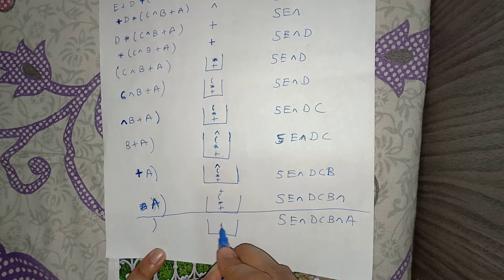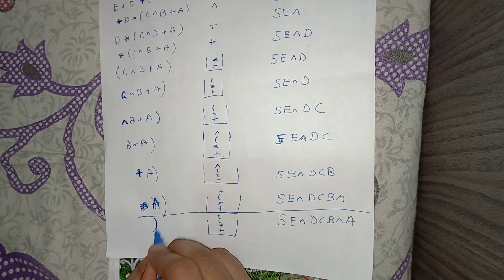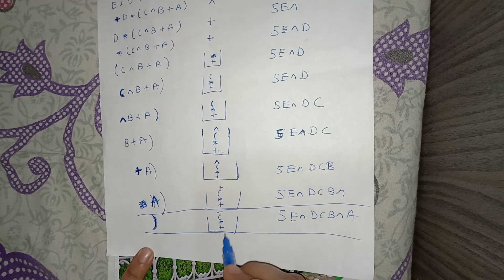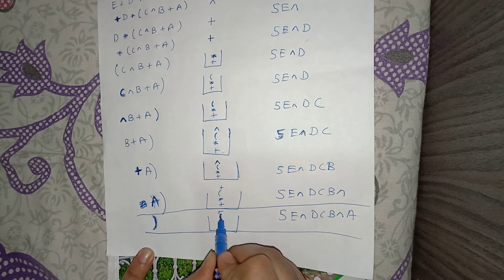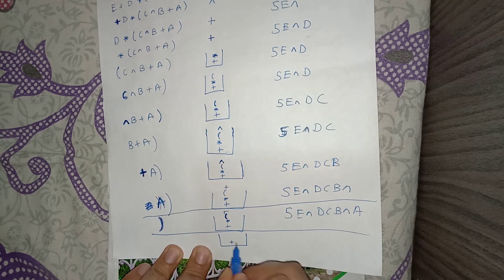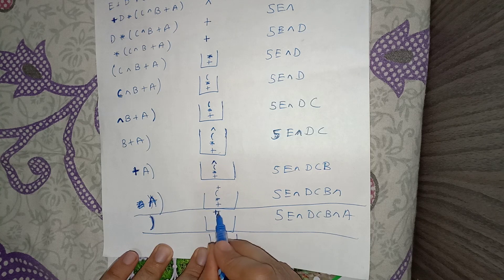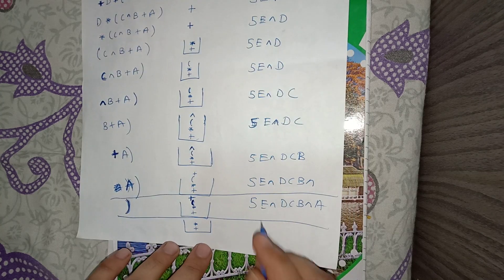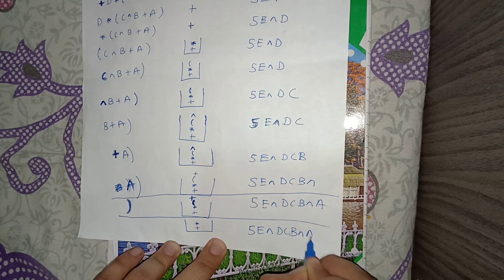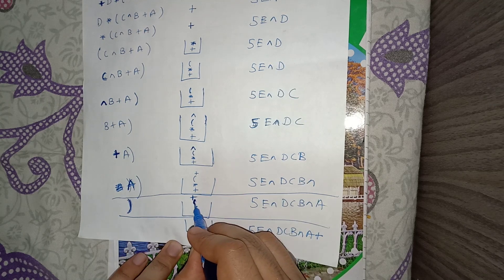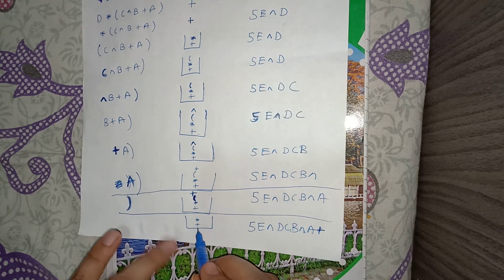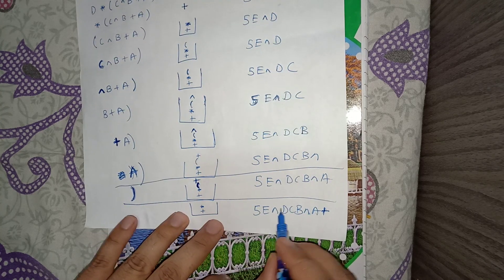The next token is a closing bracket. Whenever we encounter a closing bracket, we pop every element from the stack until we find the opening bracket. We do not print the brackets. After popping, the remaining stack contains plus and multiplication, and our output now has all the inner elements appended.